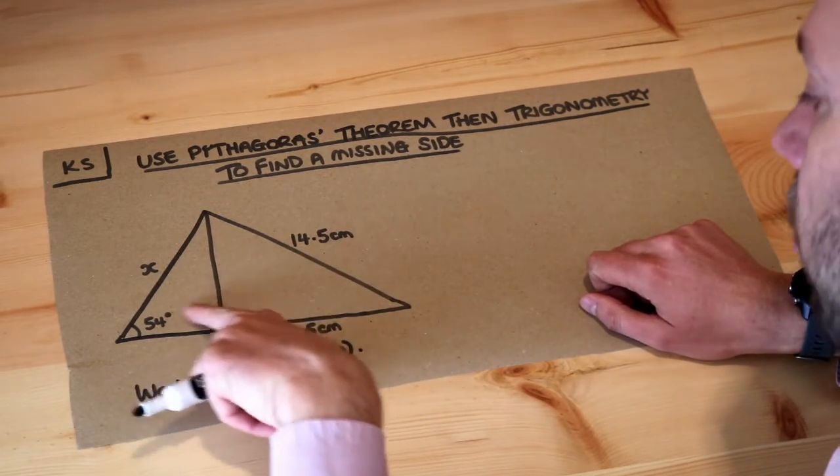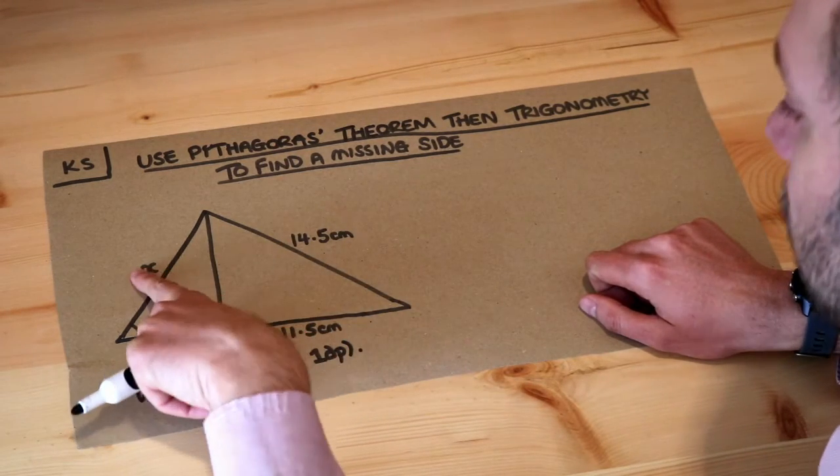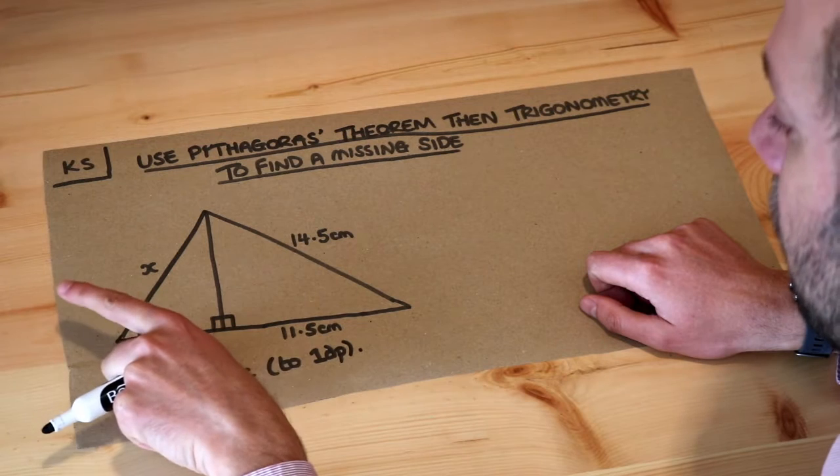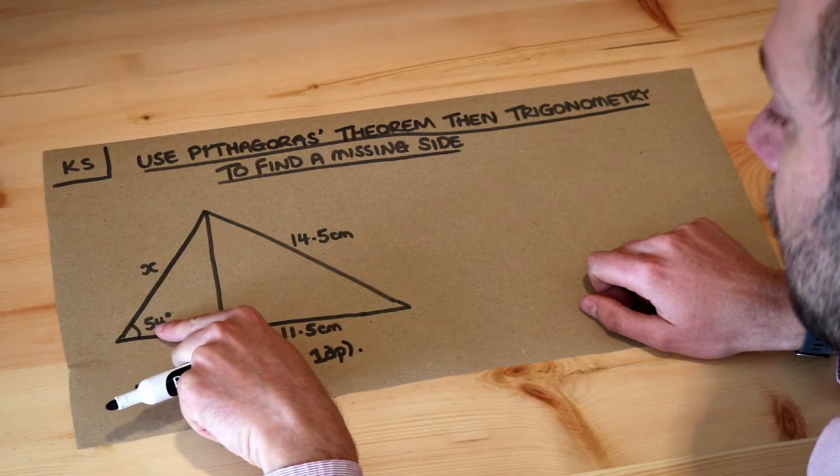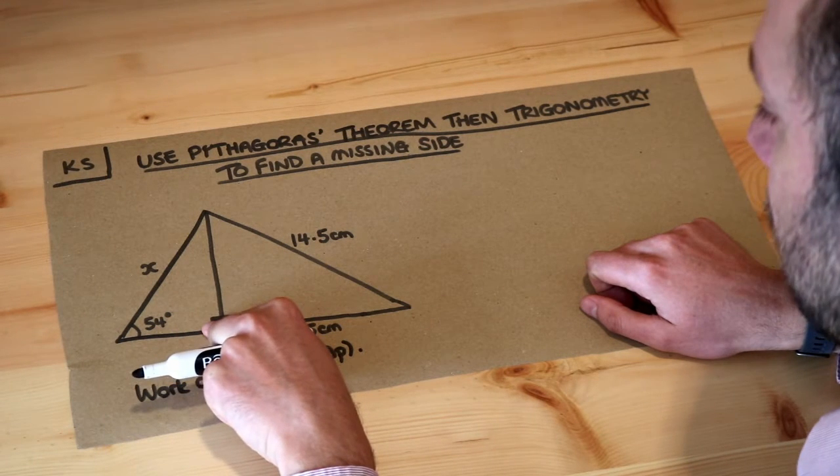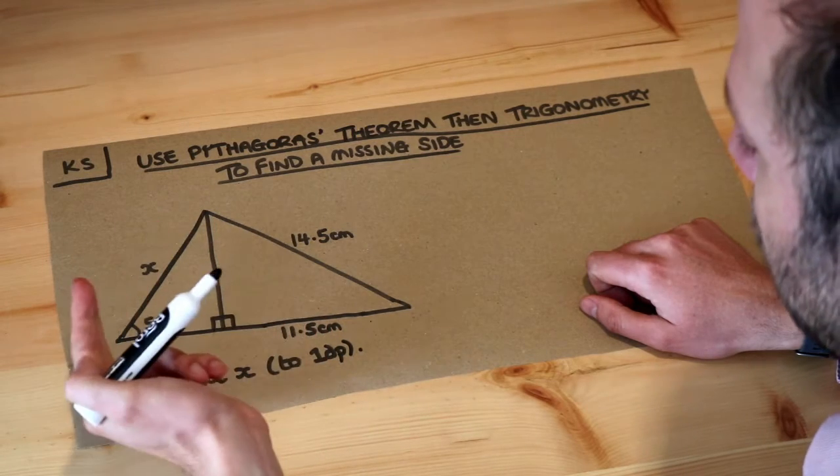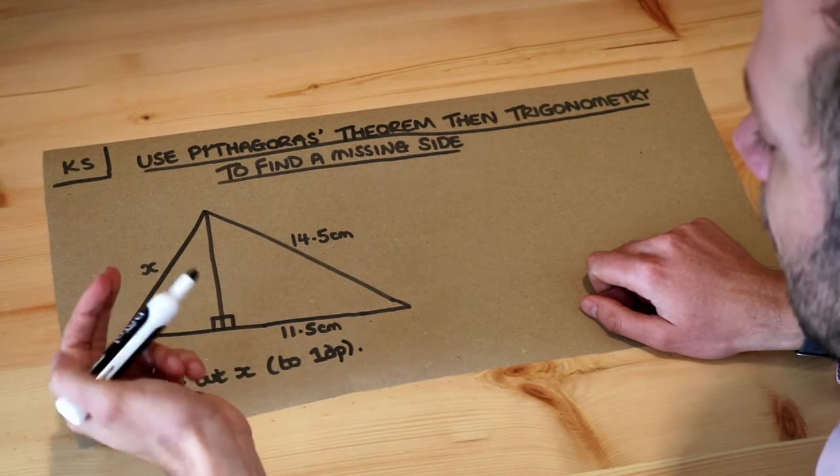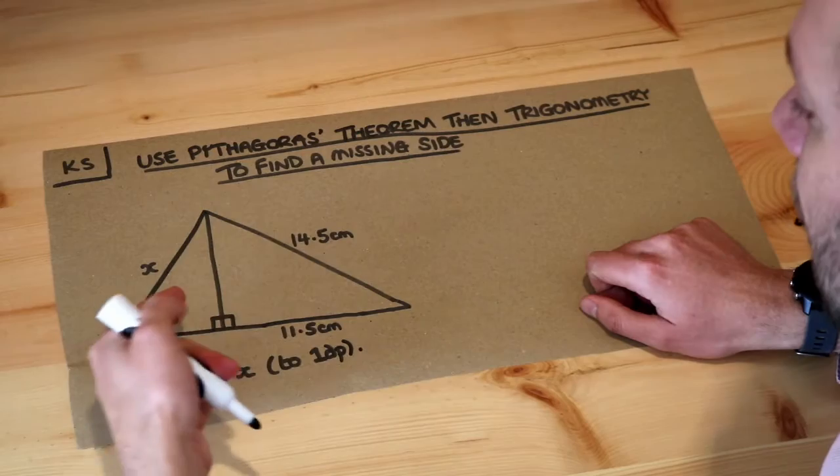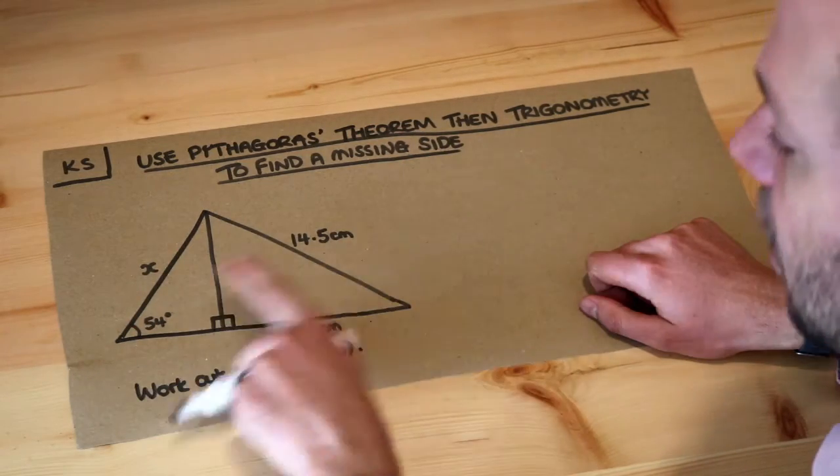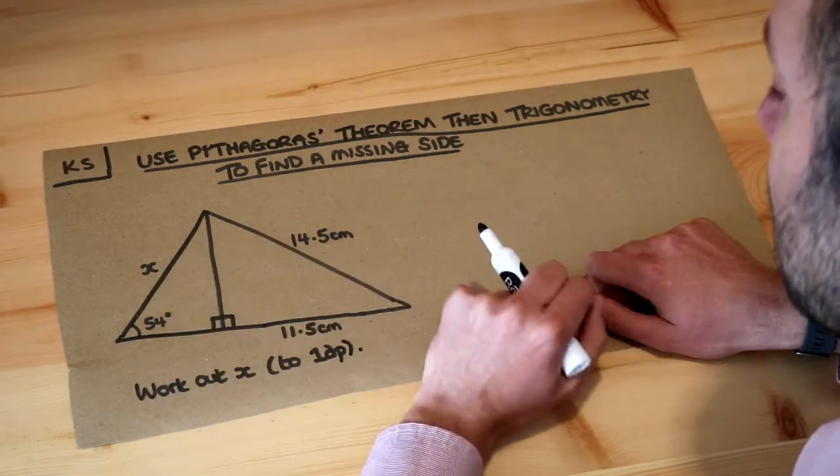Now at the moment on the left triangle we don't have enough information to work out x because the only thing we know is that 54 degree angle there and the 90 degree angle. If you want to use trigonometry we would have to know a side and an angle in order to work out another side, but we don't know any of the sides so we can't work out x.